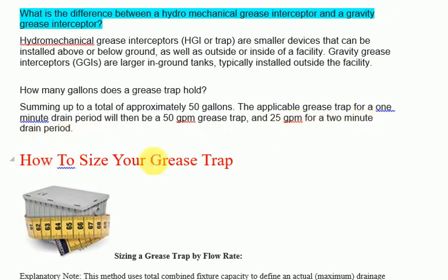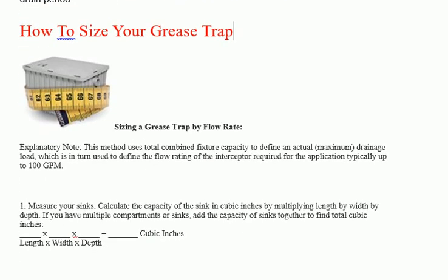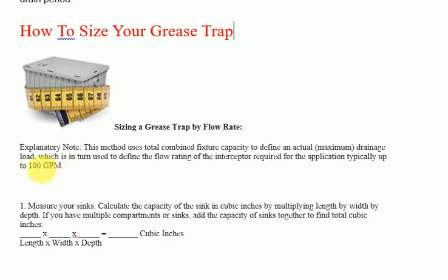How to size your grease trap: This method uses total combined fixture capacity to define an actual maximum drainage load, which is in turn used to define the flow rating of the interceptor required for the application, typically up to 100 GPM.